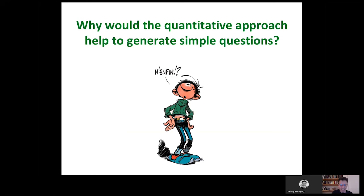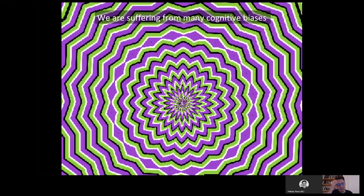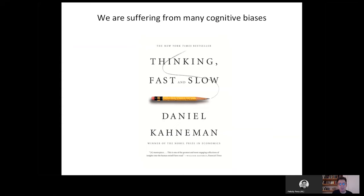Why would you need a quantitative approach to generate or address simple questions? I'll take a detour through optical illusions. This image appears to be moving, but actually it's not — it's your brain making it move. This illustrates that our brains have limits, which is why we need extra help to address the physical world around us. There have been many studies on cognitive biases, and this is really problematic in science because, as human beings, we analyze objects with these biases. The quantitative approach is a way to go around these weaknesses.